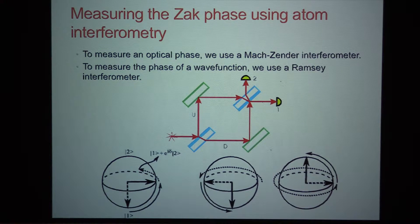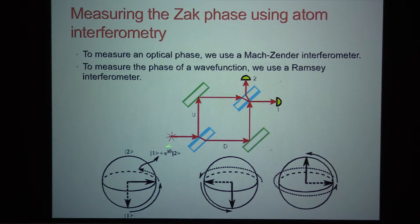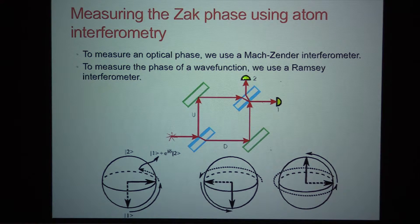If you want to measure a phase, the first thing that pops to your mind is an interferometer. Here's a Mach-Zehnder interferometer used to measure an optical phase: you take a laser beam, send it through a beam splitter, create a superposition of the photon in the two arms, then through another beam splitter, and look at the interference pattern on a pair of photodiodes. You can do the analogous thing in an atomic system.